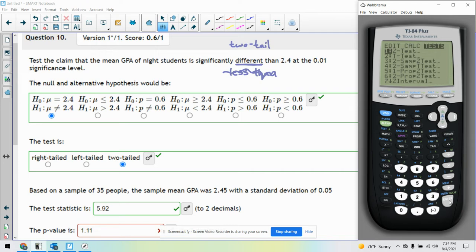Stat, that's going to be a t-test, because we don't know sigma. Based on a sample of 35, the sample GPA, so we don't know sigma. So this is going to be a t-test because sigma is unknown. So we have our mu is 2.4, x bar is 2.45, standard deviation is 0.05, sample size is 35. And we're just trying to show difference, not equal to. Calculate.